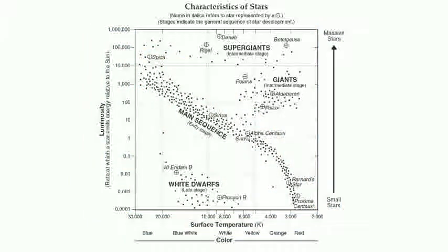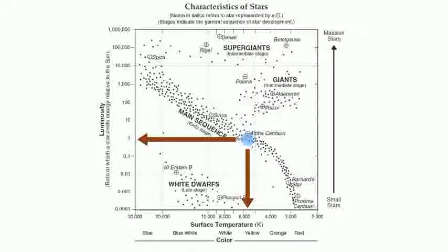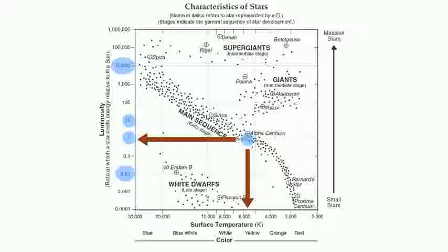Our sun has a temperature a little bit less than 6,000 degrees Kelvin, and our sun has a luminosity of 1. Luminosity of 1 is an arbitrary number given to our sun. Any numbers bigger than 1 — such as 10 or 10,000 — tell you how many times brighter a star might be. So 10 represents 10 times brighter than our sun, and 10,000 represents 10,000 times brighter. You also have numbers less than 1, which represents how many times dimmer. Stars with a luminosity of 0.01 are 1/100 as bright — significantly dimmer than our own sun.